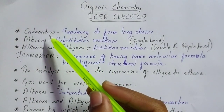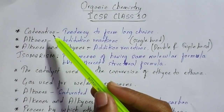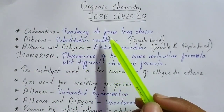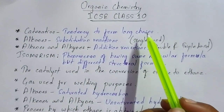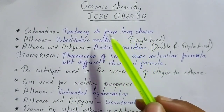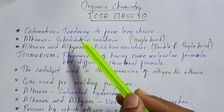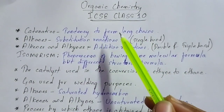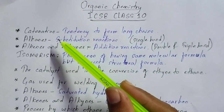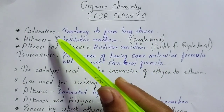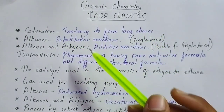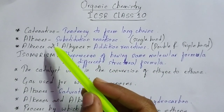These are the important definitions which are asked in your board examination. First is catenation. What is catenation? It is the tendency to form long chains. You might be asked in 'name the following' type questions as well, so you have to write that catenation is the property to form long chains.